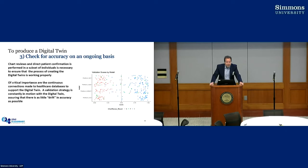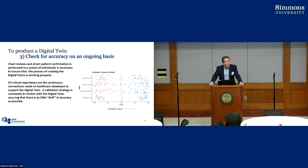And then finally, on an ongoing basis, because you can do a computed phenotype but things change — when you recompute, you need to check the accuracy again. You need some way to check for accuracy on an ongoing basis. A robust operationalization needs to take place in order to maintain your digital twins going forward and making sure there's no drift in accuracy over time.